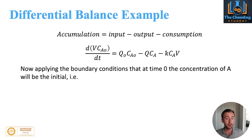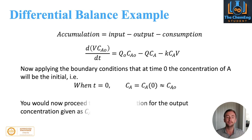If we apply the boundary conditions where time is zero, then the concentration of A will be the initial concentration C_A₀. So when t is zero, C_A will equal C_A(0) which is equivalent to the initial concentration C_A₀. That will eliminate another degree of freedom.